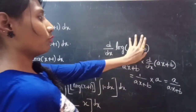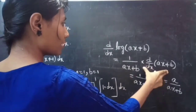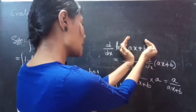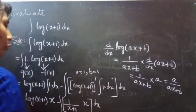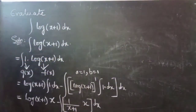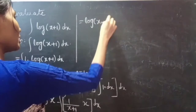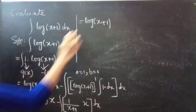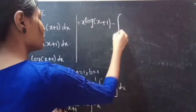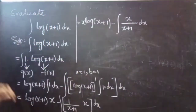The derivative of log(x) is 1/x, and applying the inner derivative gives the result. So this becomes x·log(x+1) minus integral of x/(x+1) dx.